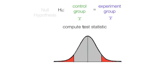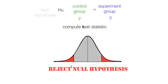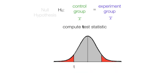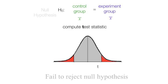When we compute the t-statistic, we'll see whether it falls in the gray area or the red area. If it's in the red area, we reject — either way we reject, upper or lower bound. And if it falls in the gray area, we will fail to reject the null hypothesis.